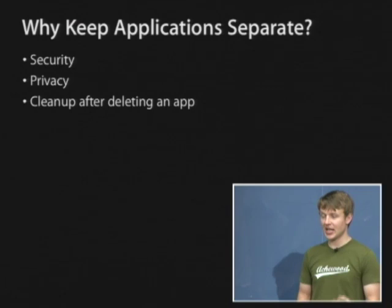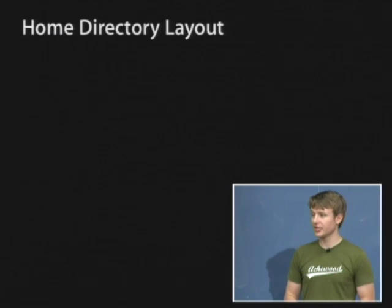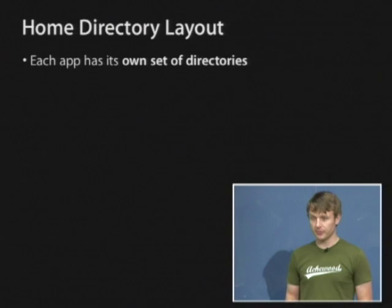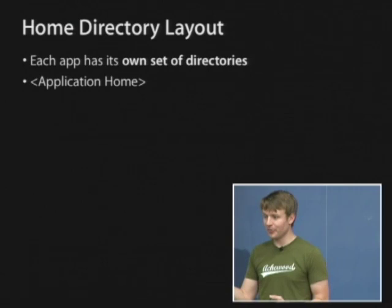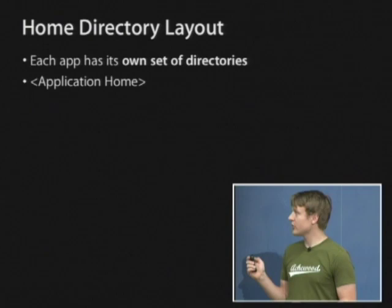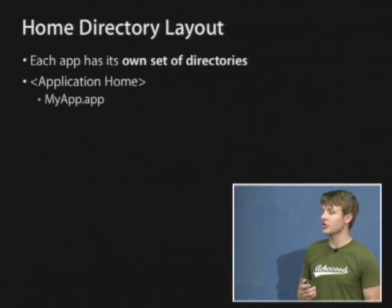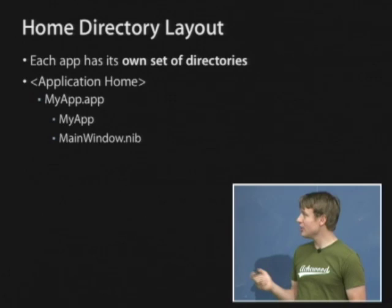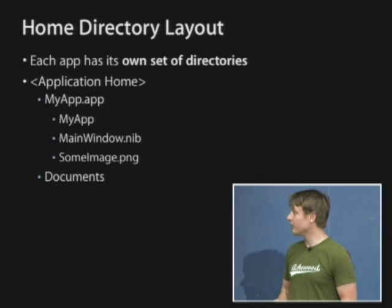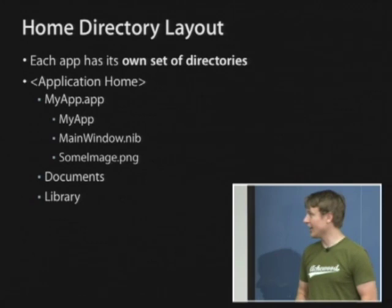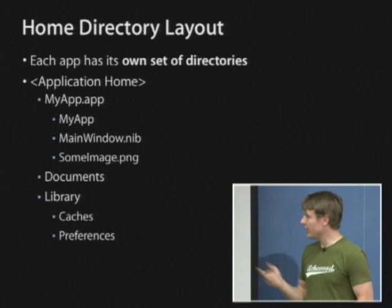What does the file system actually look like on disk? Each app has its own set of directories — basically a top-level directory with a universally unique identifier, a big gibberish string. Within that you have your app bundle containing your binary, nibs, and other resources. At the app home level there's also a Documents folder, a Library folder where user defaults get stored, and Caches. Each application is within its own folder, so when you delete an app, that entire application home directory gets deleted.